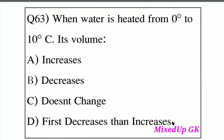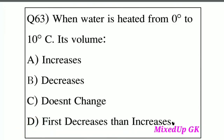Question number 63: When water is heated from 0 degrees to 10 degrees centigrade, what happens to its volume? Option A: Increase. Option B: Decrease. Option C: Does not change. Option D: First decreases, then increases. The answer is Option D — the volume first decreases, then increases.